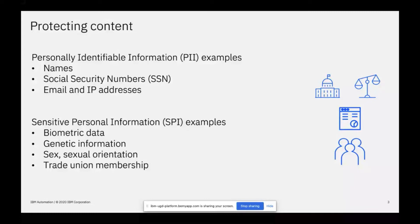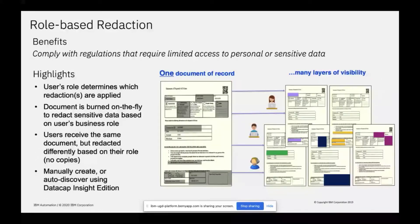So, what can we do about it? This feature — role-based redaction — is an evolution of basic redaction that's been available for many years. Role-based redaction has been available since around the end of 2016. It's a really powerful capability that allows you to comply with regulations that require you to limit access to PII or sensitive personal information. A redaction is simply a way of hiding areas of a page — obliterating them so they can't be viewed — by applying graphical annotation boxes. They can be any color you want.